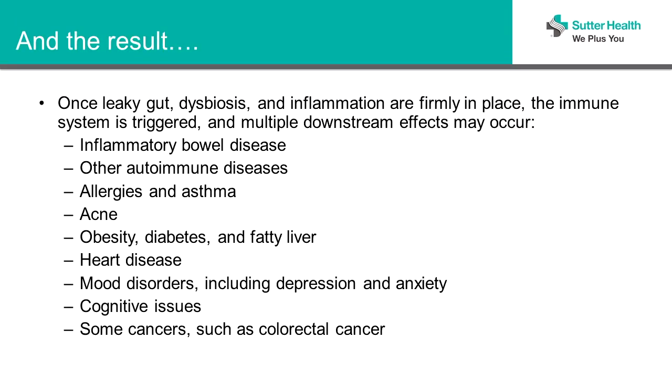And once that happens and you start that inflammatory process, remember that 70% of the immune system lies right outside that gut barrier. So when that gets activated and you have all of these inflammatory molecules created, and then antibodies get created, we can end up with inflammatory bowel disease, other autoimmune diseases, allergies, asthma, acne, obesity, diabetes, and fatty liver. We're considering many of the chronic illnesses that we deal with now in primary care probably related to what's going on at the gut level.